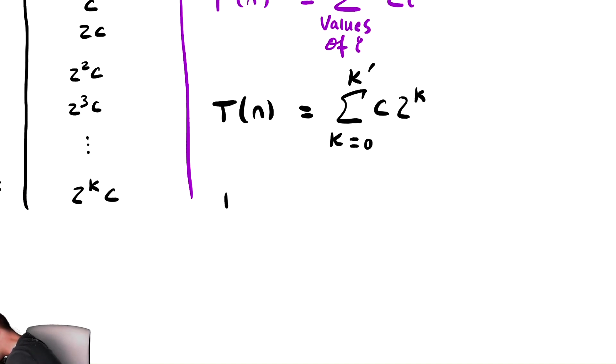So, now let's plug in that k prime, and we have t of n is equal to the sum from k equals 0 to log base 2 of n of c times 2 to the k. And now we have a summation.